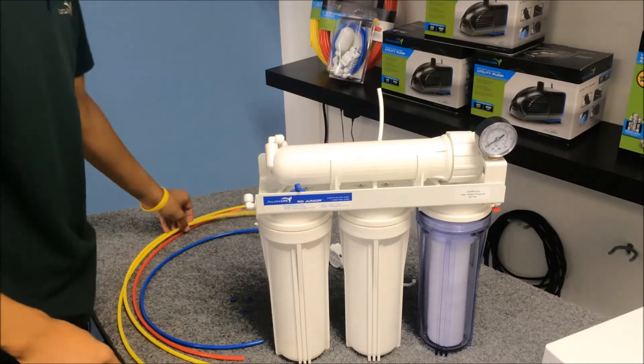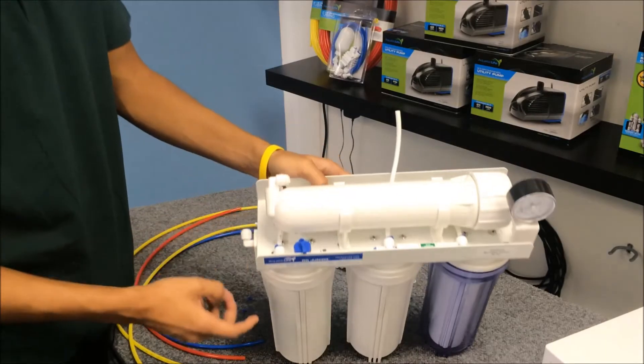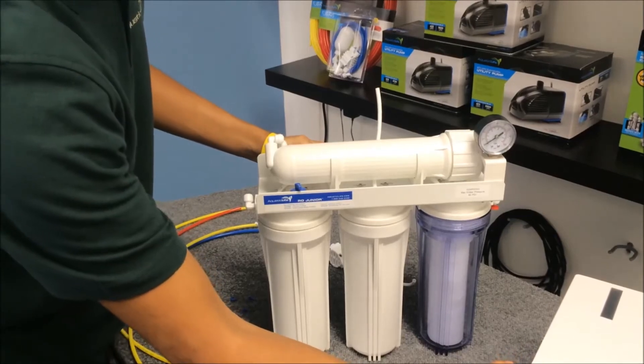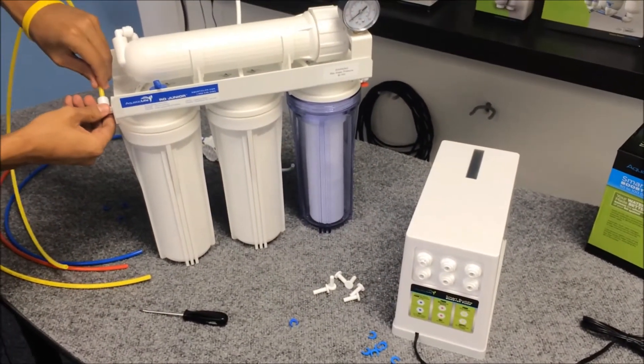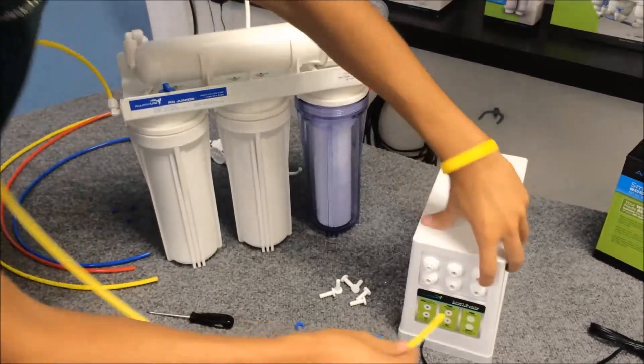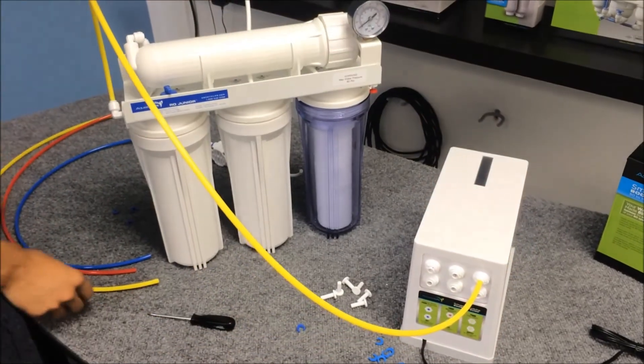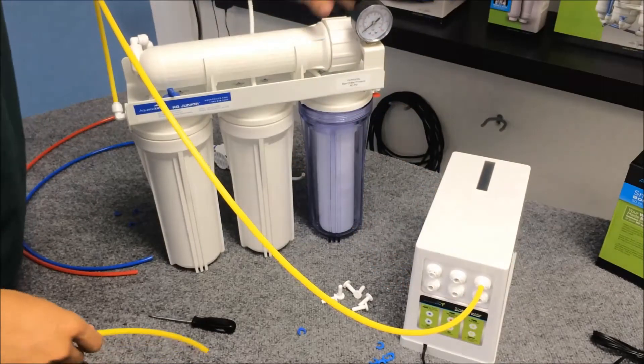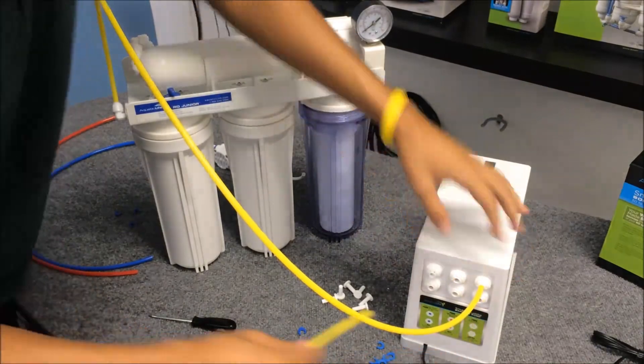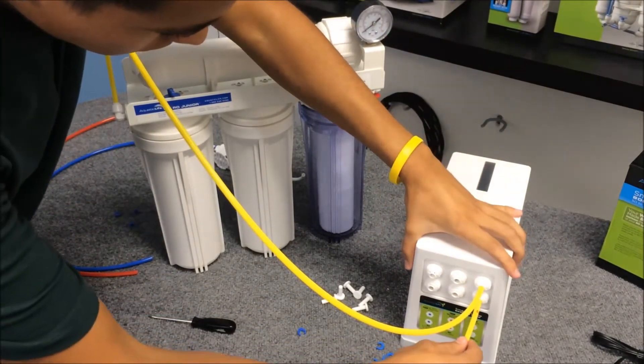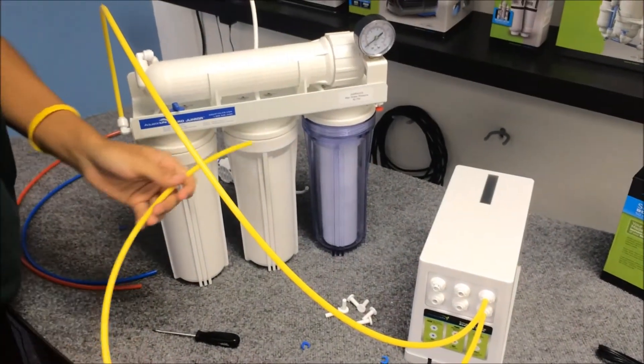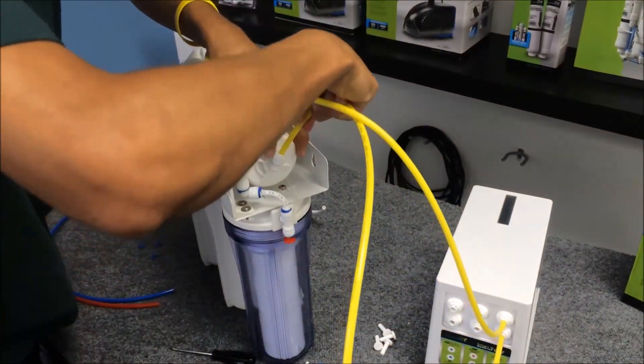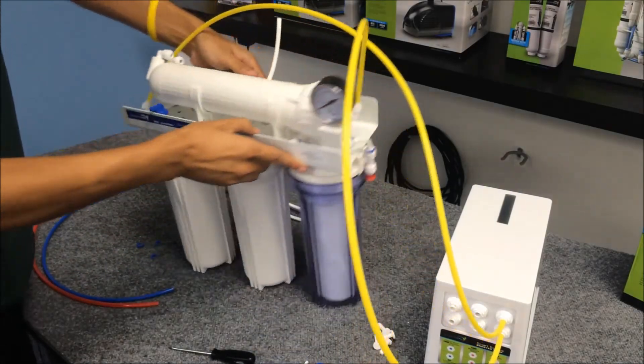So in order to plumb this, we're going to take our yellow tubing, and we're going to go from this carbon into the top first upper right-hand corner. Push that down, push that down. Now we're going to take another yellow tubing and go from this bottom right into the top of our membrane. And here's where we're going to go. All right, now we've got that hooked up.